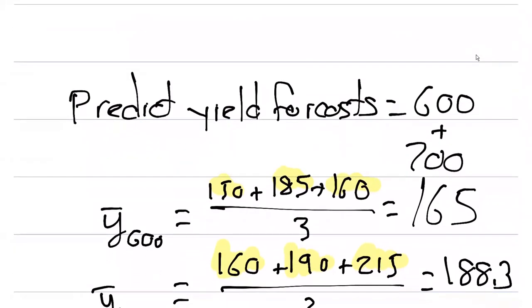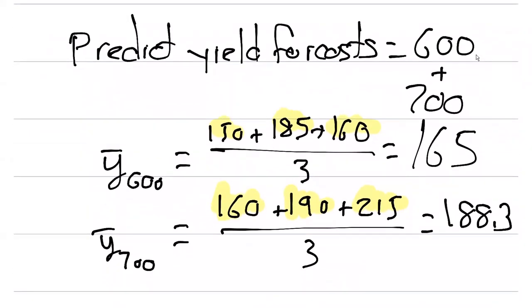We can calculate some things by predicting the yield for costs at $600 and $700 per acre. The mean when the cost per acre is $600, we take the three values from our data set from the three different farmers: 150, 185, and 160 bushels per acre. We can calculate the average to be 165.